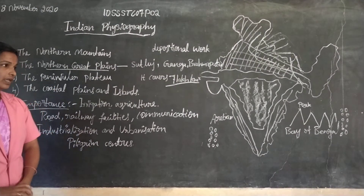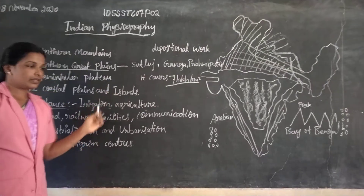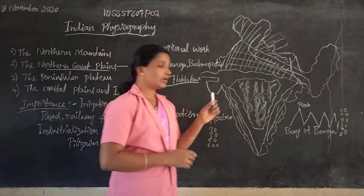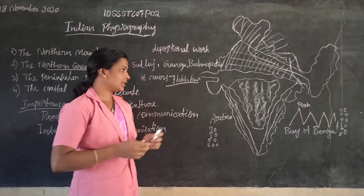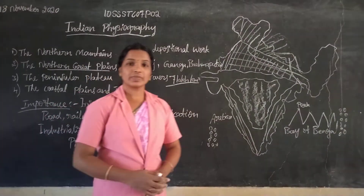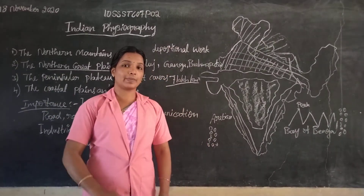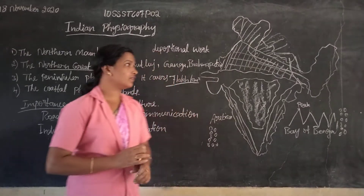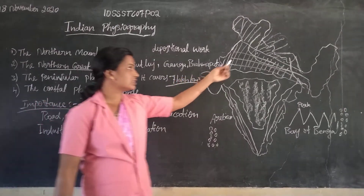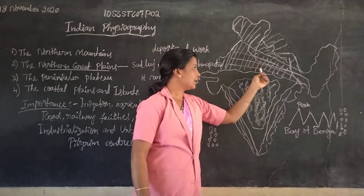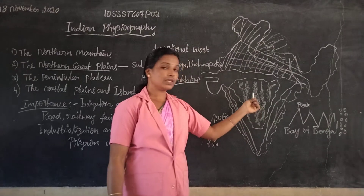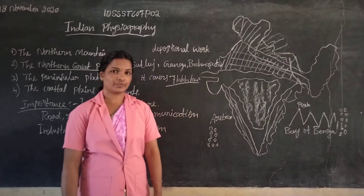These are the importances of the Northern Great Plain — the second physiographic division of India. You should know these key points: How much land is covered? The Northern Great Plain covers seven lakh kilometer square. How is it formed? It is formed by the depositional work of three main rivers — Sutlej, Ganga, and Brahmaputra. It is located between the Northern Himalayan Mountains and the Peninsular Plateau. Thank you, students.